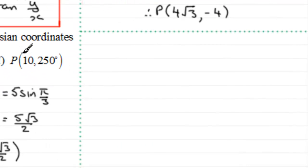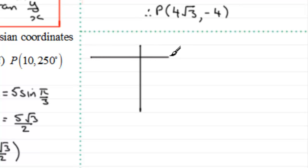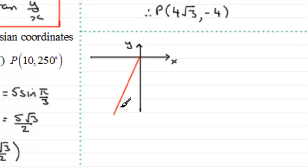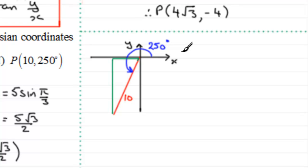Lastly, P has polar coordinates 10 and 250 degrees. Drawing a sketch with the y-axis and x-axis, 250 degrees takes us into the third quadrant, so P is 10 units from the origin down in that region. The angle going anti-clockwise is 250 degrees. Completing the triangle by projecting back onto the x-axis, I label the sides a and b.